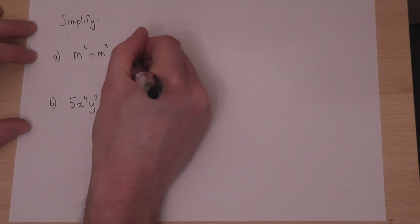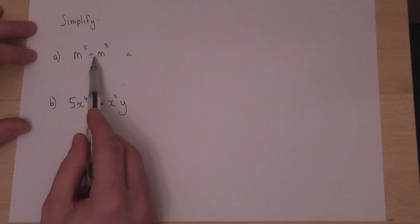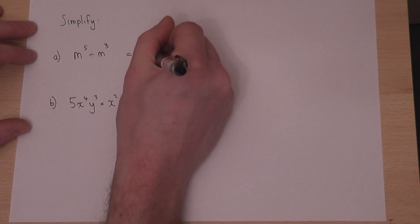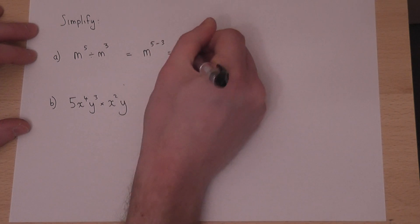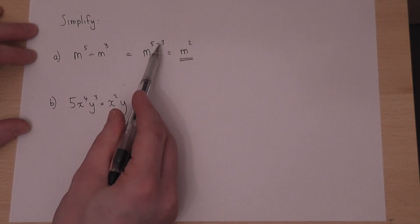The first part reviews one key skill: when we divide, we subtract the powers. So the first one is just m to the power of 5 take away 3, which is m squared. When we divide, we subtract the power.